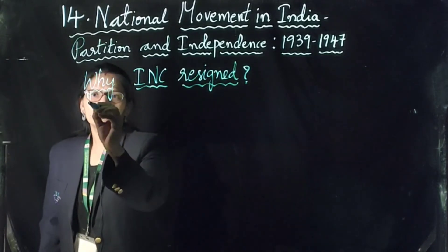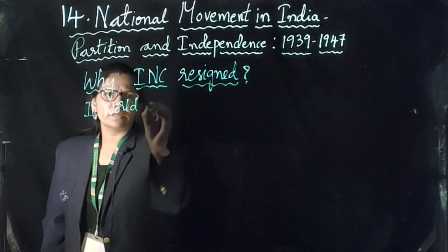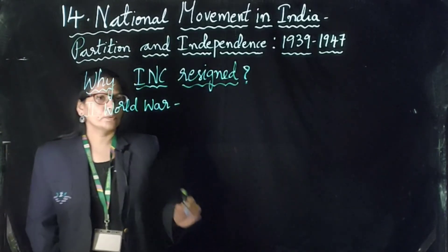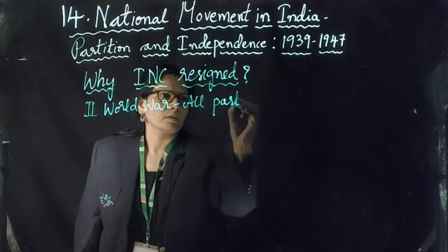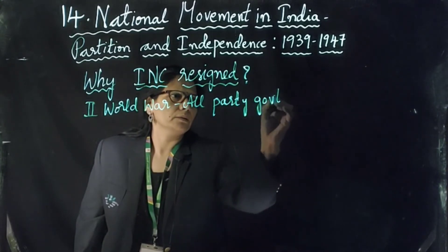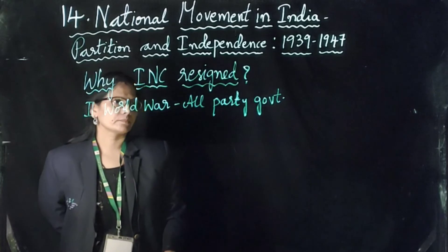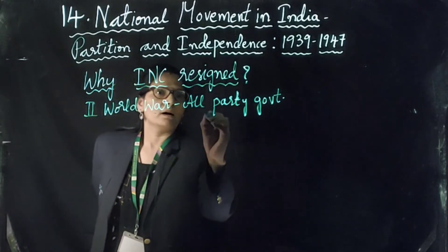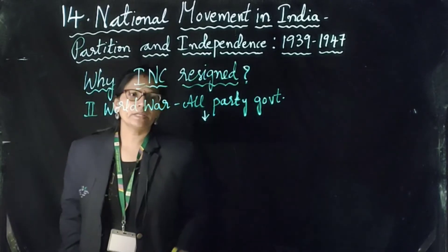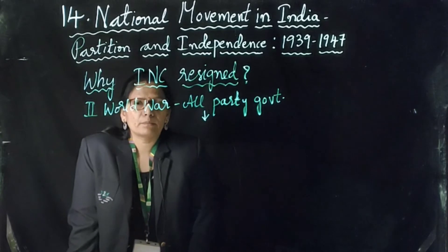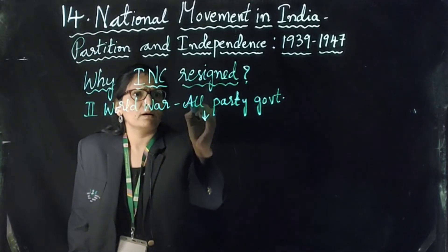During the Second World War, Britain had an all-party government. An all-party government is a combination of many political parties. During elections, if one political party does not get a complete majority, then many parties together form a government, which is known as an all-party government.